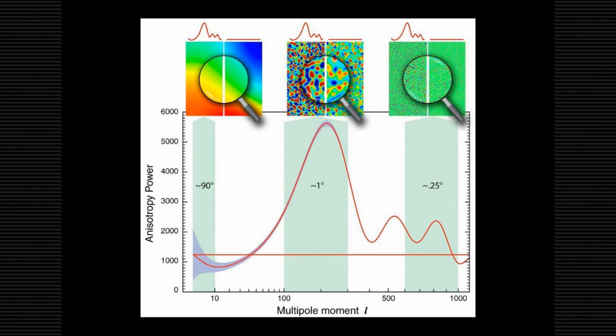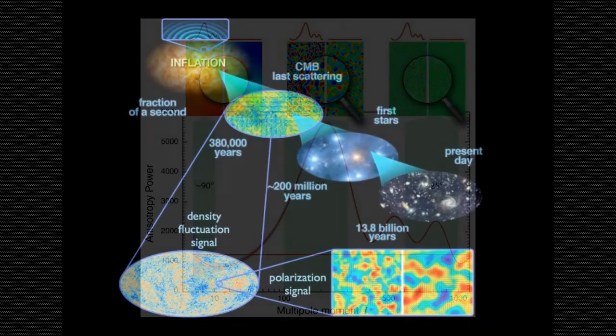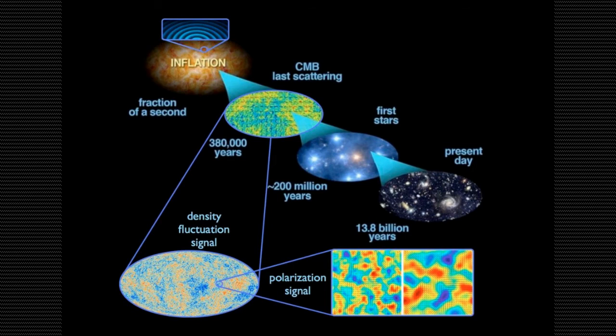In all but the most contrived models of inflation, and some of those we can rule out, it's only the last 10^-33 seconds or so of inflation that impacts our universe. The exponential nature of inflation wipes out any information that occurred prior to that, separating it from anything we can observe by inflating it beyond the portion of our universe that we can observe.